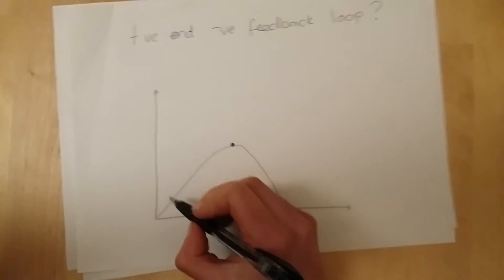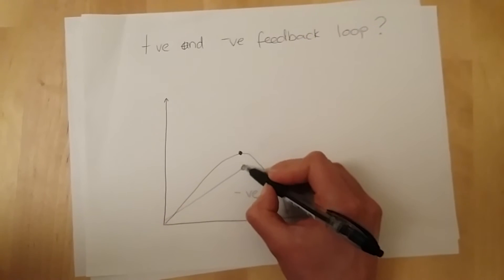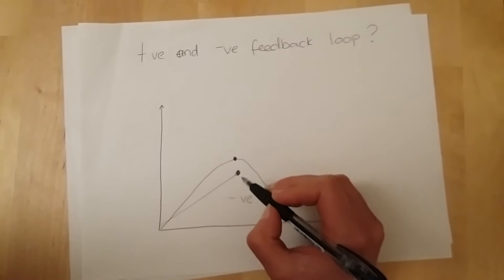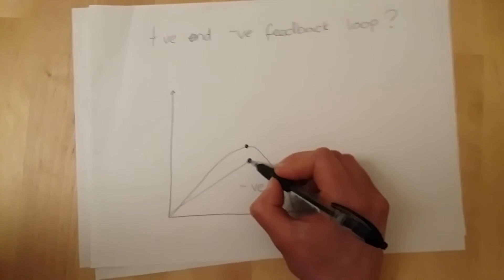Whereas a positive is where a change takes place in the body, and then all of a sudden that kicks off in terms of the nervous system and we go, oh actually, it's time for that change to be accelerated, and that change gets accelerated upwards. So the change continues.